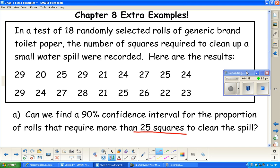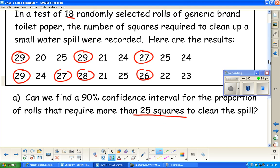Let's say we want to go ahead and find a part A here. Can we find a 90% confidence interval for the true proportion of rolls that require more than 25 squares? So we're looking for a certain condition here, we want more than 25 squares. Let's look at our sample. We can get an estimate of the proportion just from our sample. In our sample, more than 25, we had 7 out of the 18.